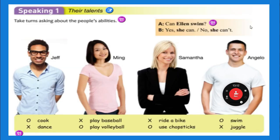The X means they can't do it. Can't play baseball. Can play volleyball. Can use chopsticks. Can't ride a bike. Can swim. Can't juggle. Listen and repeat. Jeff can cook. Can Jeff cook? Yes, he can. Can Jeff dance? No, he can't.